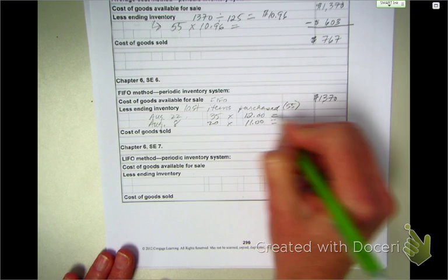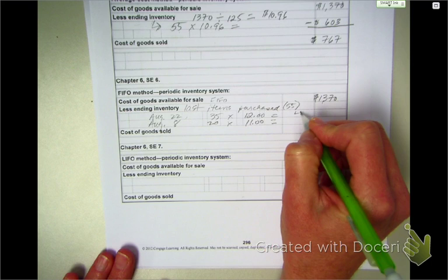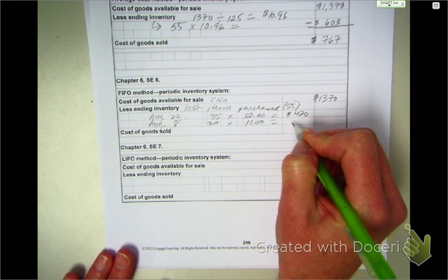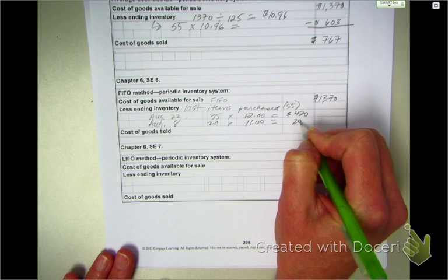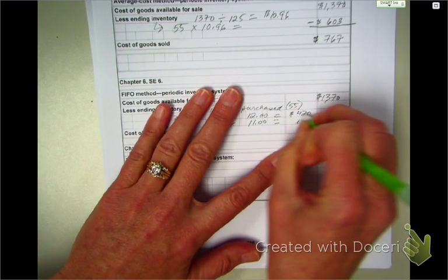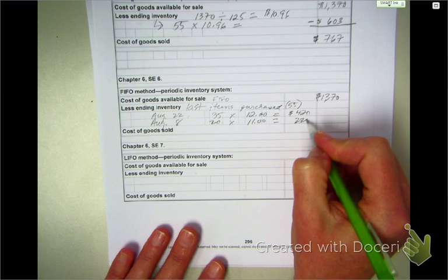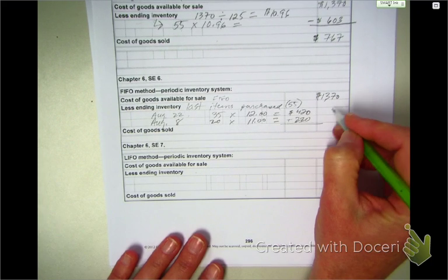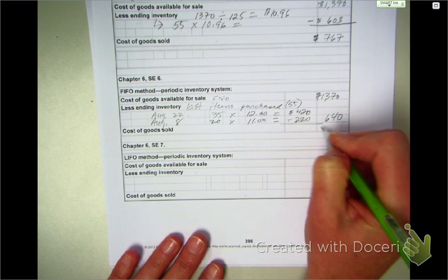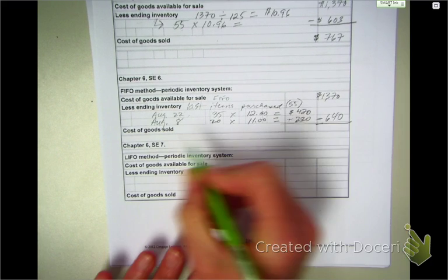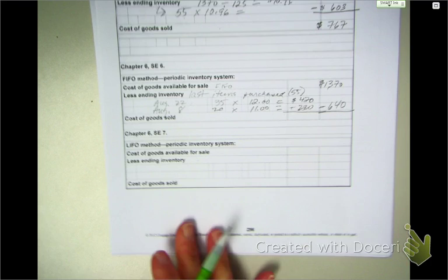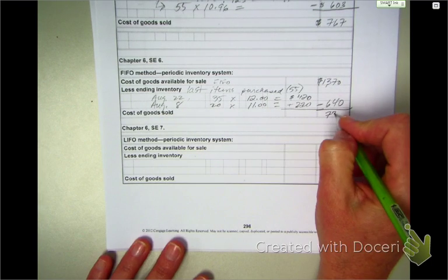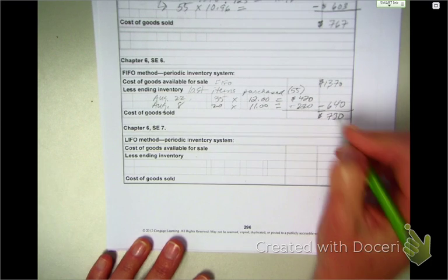So, 35 at 12 is going to be $420. And 20 at 11 is $220. Total those up. I've got $640 is the value. So, to get my cost of goods sold, it's going to be my $1370 minus my $640. So, the value of my cost of goods sold is $730.